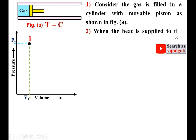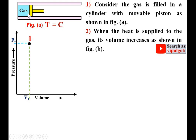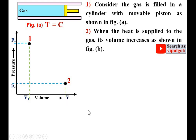When heat is supplied to the gas, its volume increases as shown in figure B. The volume has increased, and now it is the final position of the gas, that means state 2. If I show state 2 on the PV diagram, the corresponding pressure is P2 and the corresponding volume is V2. This process 1 to 2 is known as the constant temperature process, also known as the hyperbolic process because the shape of that curve is a hyperbola.